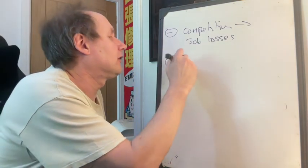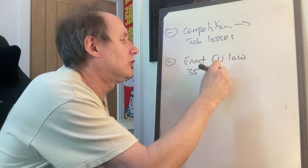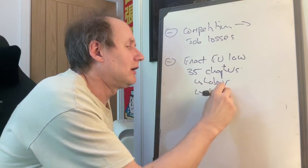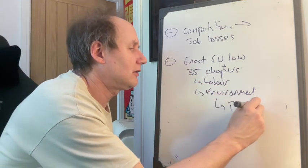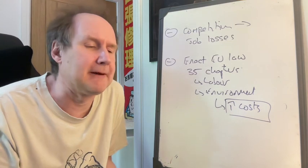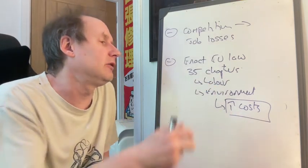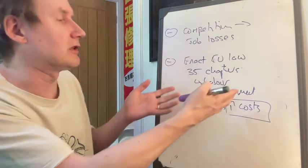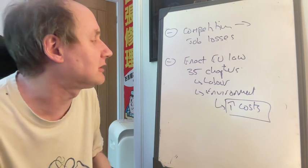Secondly, you've got to enact all EU law. So there are 35 chapters of EU law, each which has loads and loads of stuff on labour, the environment, and so on and so forth. And what that's going to do is that's inevitably going to increase the costs of local businesses, and therefore it might erode the competitive advantage that being part of the new member state might benefit from having relatively low wages and so on. What it's doing is by imposing restrictions on environment and labour laws and so on, it's driving up your cost. Now, obviously, there are lots of benefits coming from having labour laws and having a clean environment and so on. But you could argue that that is a disadvantage for a new member state.